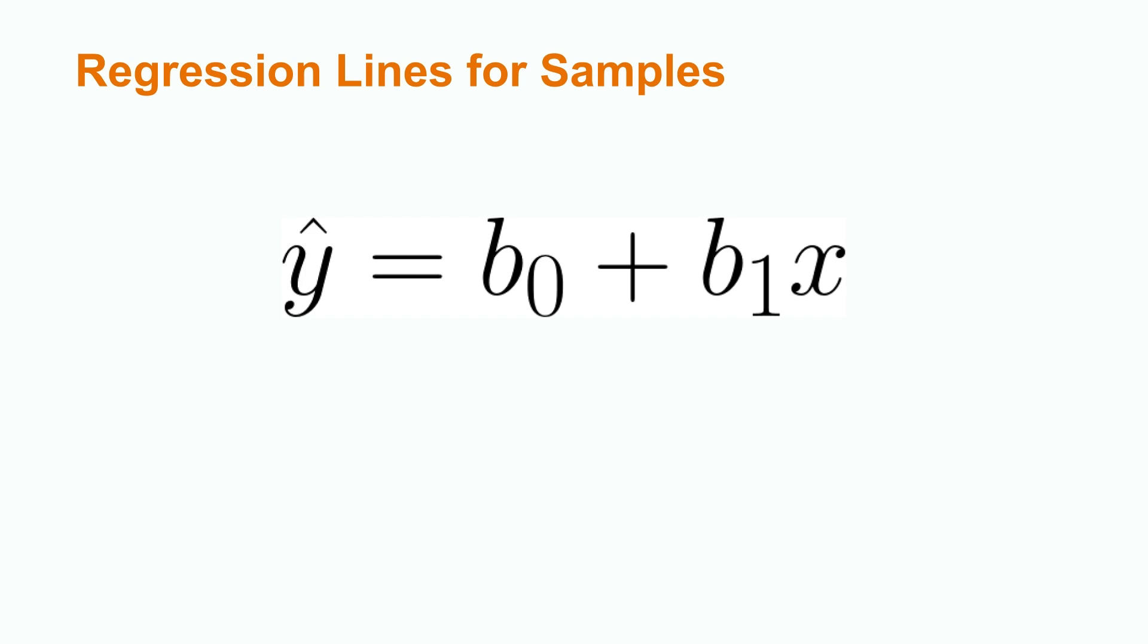b sub 0 is called our y-intercept. This is the value of y hat when x is 0, or someone's mental health rating assuming zero hours of exercise each week.